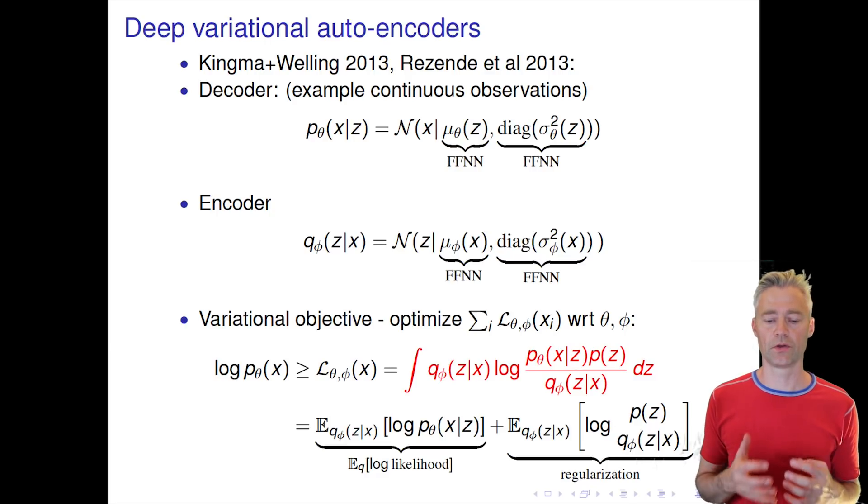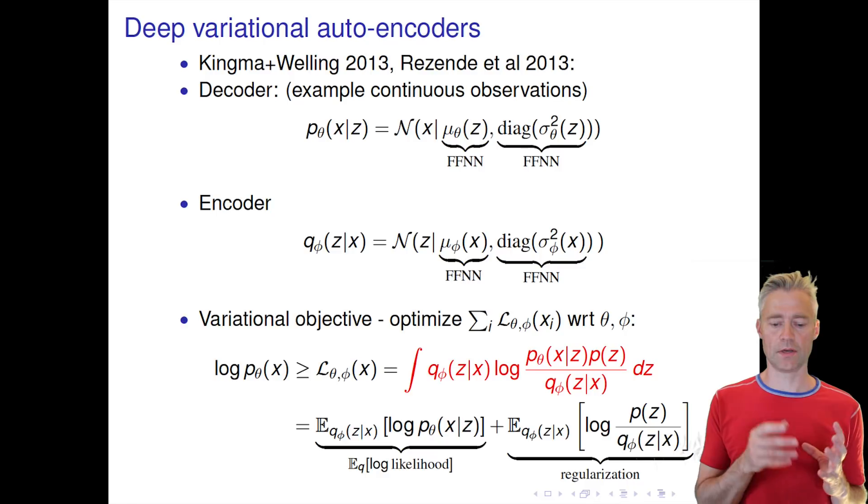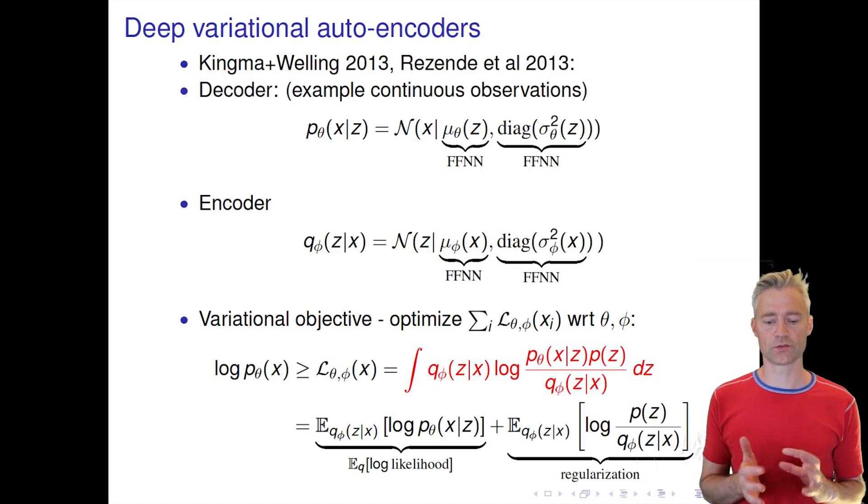The first term here is the expected value over the q distribution, or the encoder distribution, of the log likelihoods. So this is a data fit term.